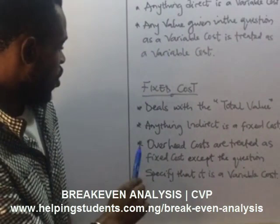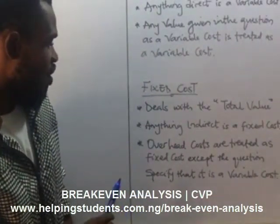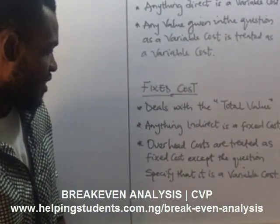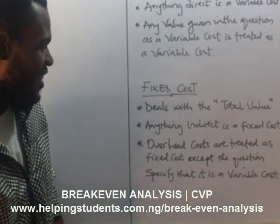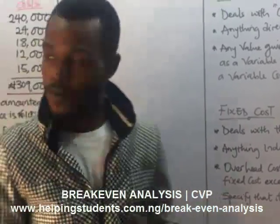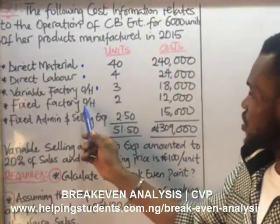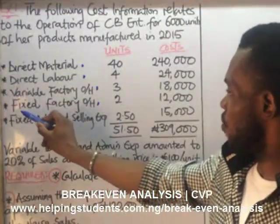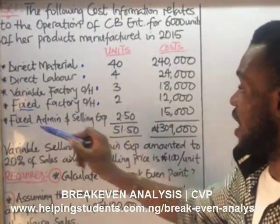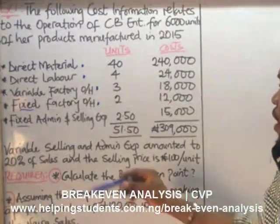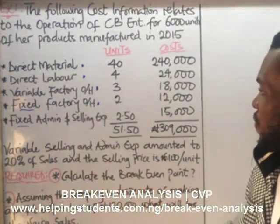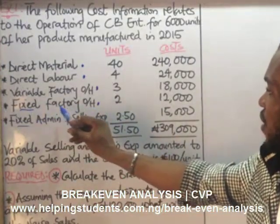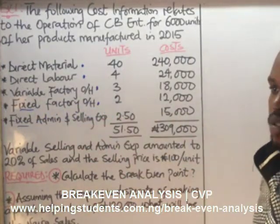Overhead costs are treated as fixed costs except the question specifies that it is a variable cost. This is an overhead cost, and moreover, seeing the word 'fixed' identifies that these are fixed costs already. So the fixed factory overhead is a fixed cost, and the fixed admin and selling expenses is also a fixed cost.